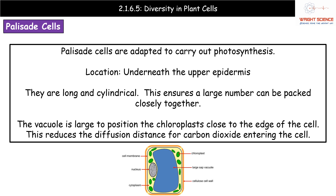The first type of specialized plant cell we need to be aware of are the palisade cells — the first plant cell you'd have learned to draw back in year seven. Palisade cells are all about carrying out photosynthesis. We find them just underneath the upper epidermis of the leaf, and they tend to be long cylindrical cells. The idea of this shape is that we can pack lots of them in side by side just under the epidermis.